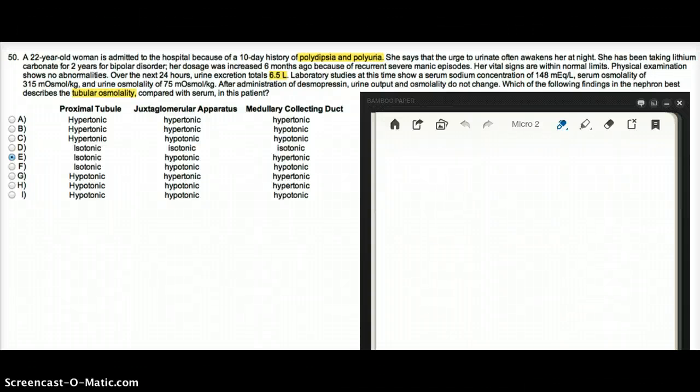This question deals with a 22-year-old woman admitted to the hospital because of a 10-day history of polyuria and polydipsia. She says that the urge to urinate often awakens her at night. She has been taking lithium carbonate for two years for bipolar disorder. Her dosage was increased six months ago because of recurrent severe manic episodes. Her vital signs are within normal limits. Physical exam shows no abnormalities over the next 24 hours.